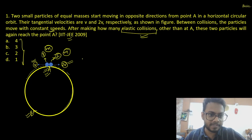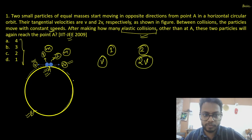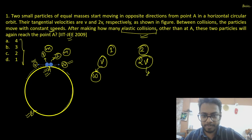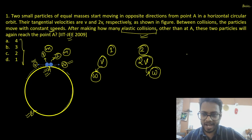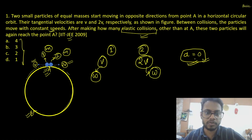Let's consider particle 1 with initial velocity V and particle 2 with velocity 2V moving tangentially. Since particles move at constant speed between collisions, there is no acceleration. Because this is circular motion, we consider angular velocity omega. The angular acceleration alpha is zero between collisions since the particles move at constant speed — this should be clear from the circular motion chapter.